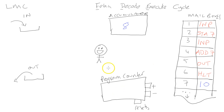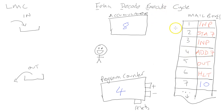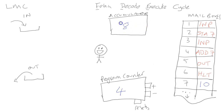By now you can probably guess what's going to happen. He goes over to position 4, fetches the instruction which says ADD, and adds whatever number is in the accumulator to whatever number is in mailbox 7. So he decodes that instruction and executes it: he goes to position 7, gets that 10, and adds it to the 8 - doing 8 plus 10 giving a total of 18 in the accumulator.